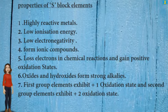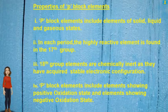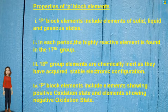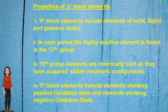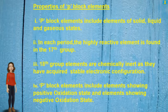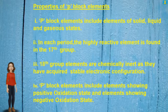Oxides and hydroxides of S block elements form strong alkalis. Properties of P block elements: P block elements include elements of solid, liquid, and gaseous states. In each period, the highly reactive element is found in the 17th group. 18th group elements are chemically inert as they have complete electronic configuration. P block elements include elements showing both positive and negative oxidation states.